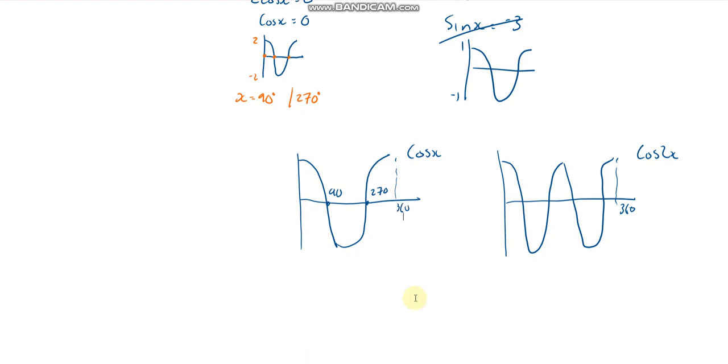Well, we just half what we've got. So if I half these values, I'm going to get 45 and 135. Yeah, and then to work out these values, we just add the period on.